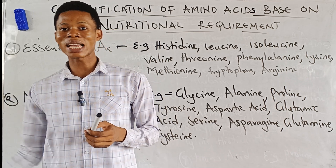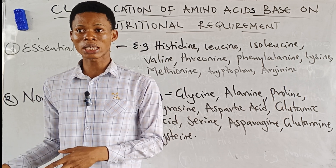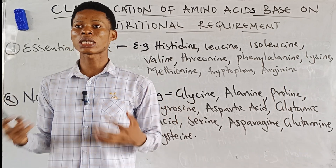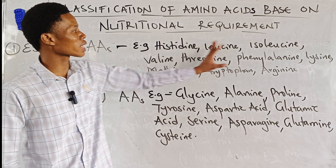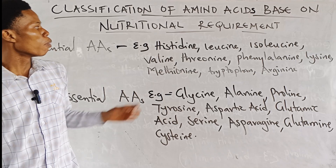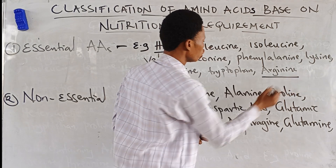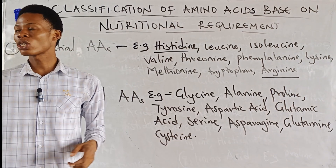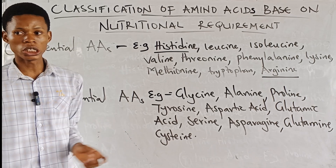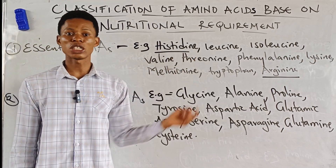To recap: if an amino acid cannot be synthesized in the body, it is essential — it is essential that you get it from your diet. However, histidine and arginine are exceptions because they can be partly synthesized in the body, just not wholly. So strictly speaking, they are not fully essential; they are called semi-essential amino acids.